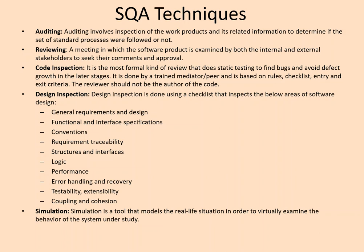Some SQA techniques include: auditing — inspection of work products and related information to determine if set standard processes were followed; reviewing — a meeting in which the software product is examined by both internal and external stakeholders to seek comments and approval; code inspection — a formal review aimed at finding bugs and avoiding defect growth in later stages; design inspection — done using a checklist that inspects areas of software design like requirement traceability, logic, error handling, and recovery; and simulation — a tool that models real-life situations to virtually examine the behavior of the system under study.